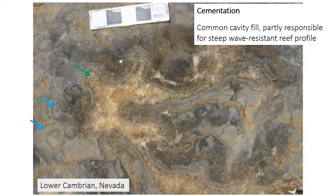Reef cavities are also commonly filled by cement, indicating they were open void spaces as the reef was buried and lithified. The blue arrows point to frame-building archaeocyath sponges, and the green arrow shows a large cement and sediment-filled cavity. More generally, cementing and binding of the reef framework plays an important role in the rigid nature of the reef, allowing it to have steep, wave-resistant profiles that characterize bioherms, but reefs in particular.